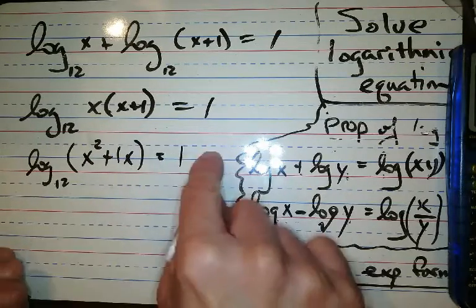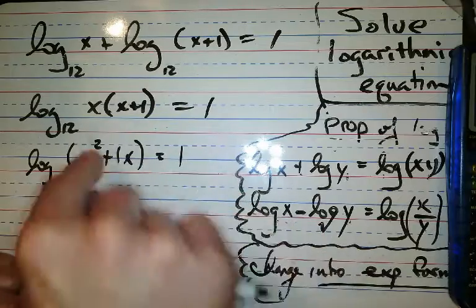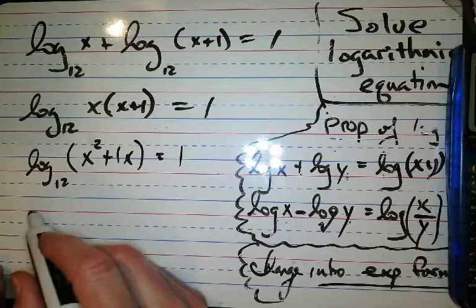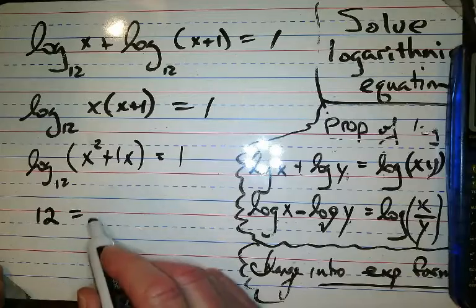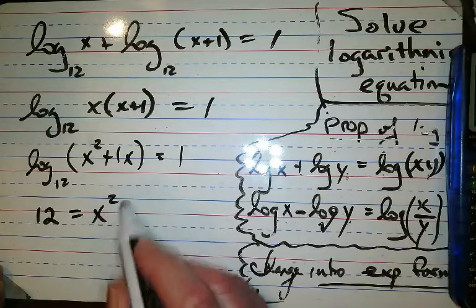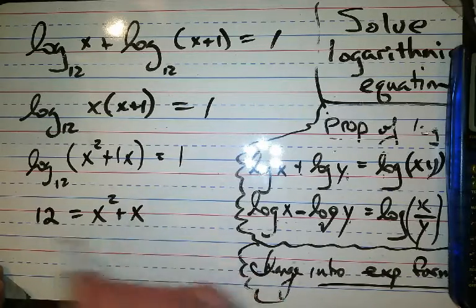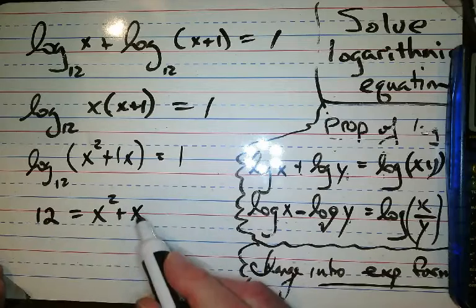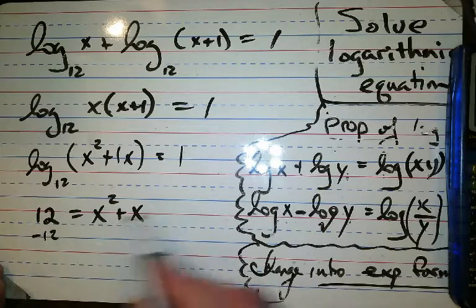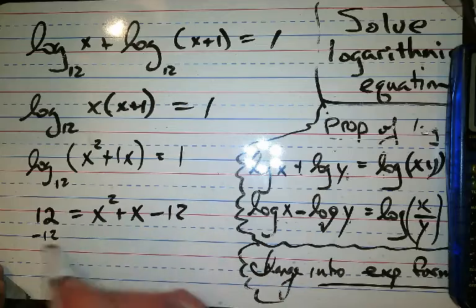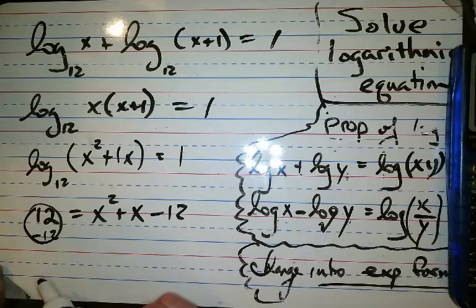Now remember 1. 12 to the 1 power equals the number inside. We just did that all yesterday. So 12 to the 1 power is 12 equals the number inside. Now look at this. This is quadratic. We cannot solve a quadratic unless we make it equal 0. So that means we have to subtract 12 from both sides. And now we have 0 over here.